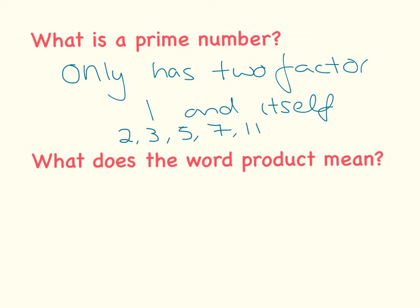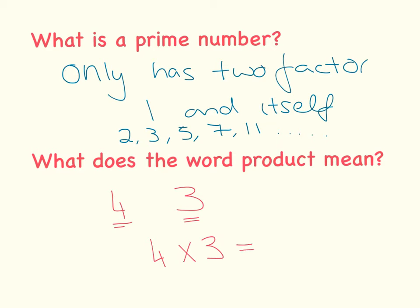Seven, eleven, and so on. The next question is: what does the word 'product' mean? Product is another word for multiply. So if I gave you two numbers, say four and three, and said find the product of four and three, the answer would be four multiplied by three, which is 12. Product is another word for multiply.